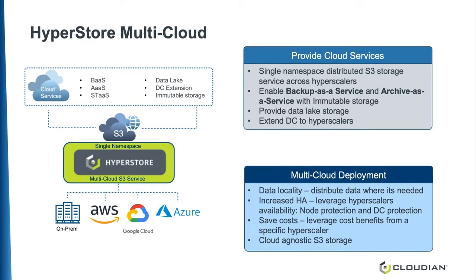Cloudian's HyperStore provides an S3 storage platform across on-prem to all the major hyperscalers — AWS, Google and Azure. With HyperStore, you can have a single namespace and the same S3 service across all clouds, giving you consistent S3 APIs and the same user experience. This removes the provider lock-in. HyperStore has the highest compatibility to the S3 API set outside of AWS, including headers and error codes, so if you have an application using S3 from AWS, it's very likely it will be compatible with our HyperStore S3 object storage.